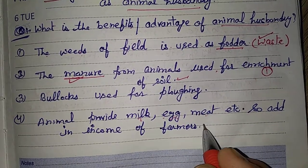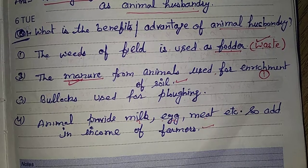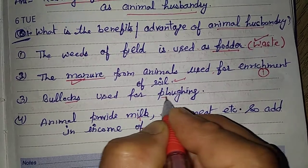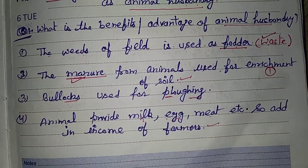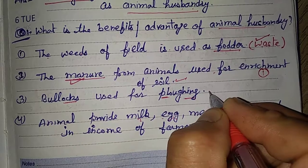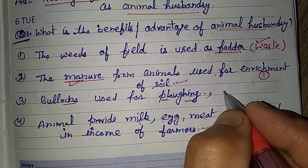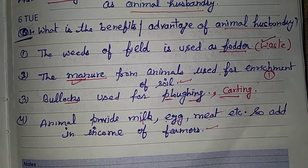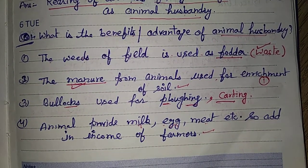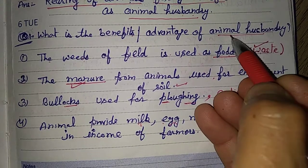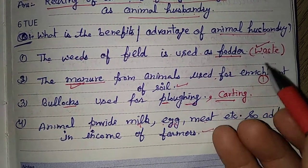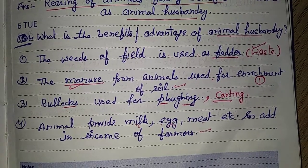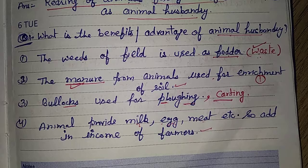It adds to their income. Also, bulls are used for plowing — that is, for driving the plow in the field — or for running the chakra (water wheel). So these are the benefits of animal husbandry. It means animal husbandry can convert waste into money — into an income source.